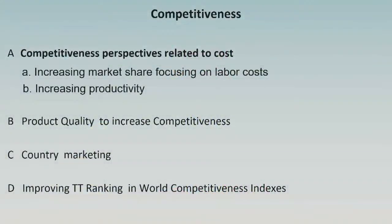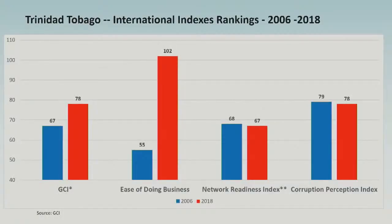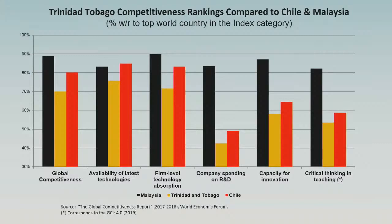Moving to competitiveness: given the information now available, Trinidad and Tobago should improve its ranking in world competitiveness indexes. Comparing 2006 with 2018, there is a decrease in the Global Competitiveness Index, a deterioration in the Ease of Doing Business, and the Network Readiness Index has stagnated. The Corruption Perception Index remains at a high level in this country.